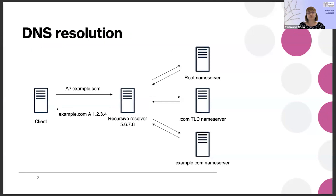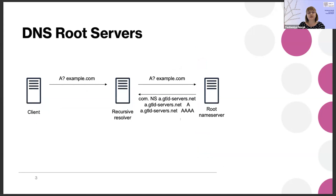To very briefly recall how DNS resolution usually looks like: when the end client wants to resolve a domain name, its recursive resolver contacts the root name server, the TLD name server, and finally the example.com name server, which provides the response sent back to the client. When a query is sent to the root server, we're not expecting to get the final response — root servers are not authoritative for example.com or any other second-level domain name, so we only expect referrals and glue records.